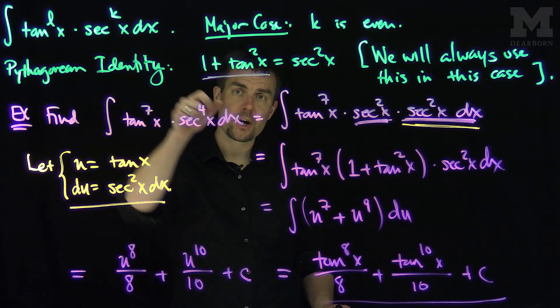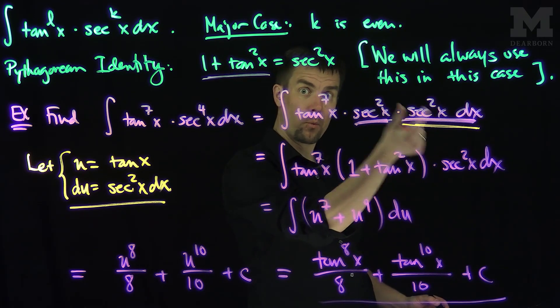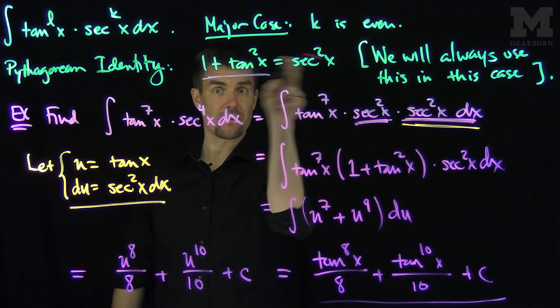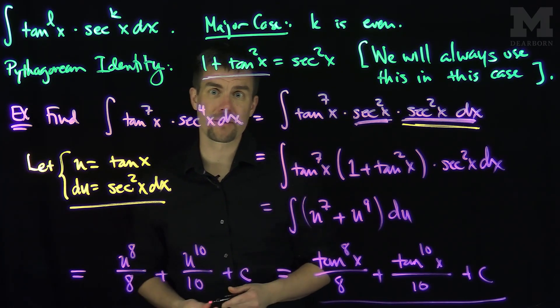So even power of secant, you keep one factor of secant squared out for your substitution and turn the rest of the even powers of secant into tangents. Thank you very much.